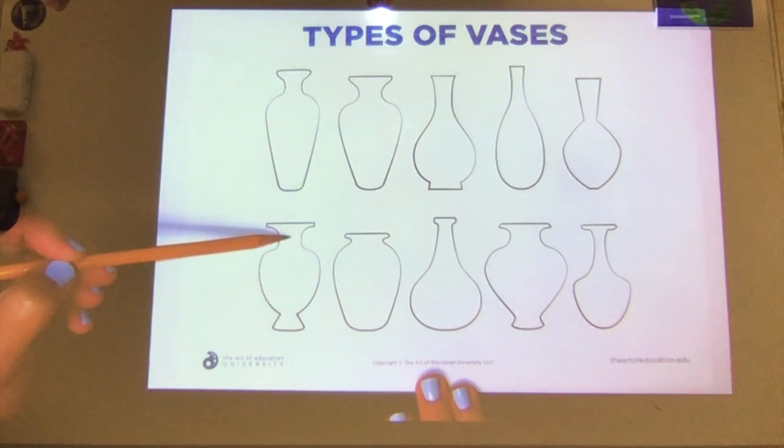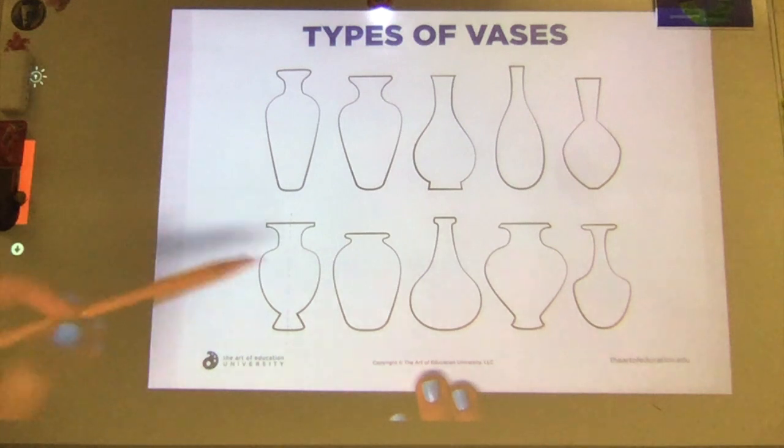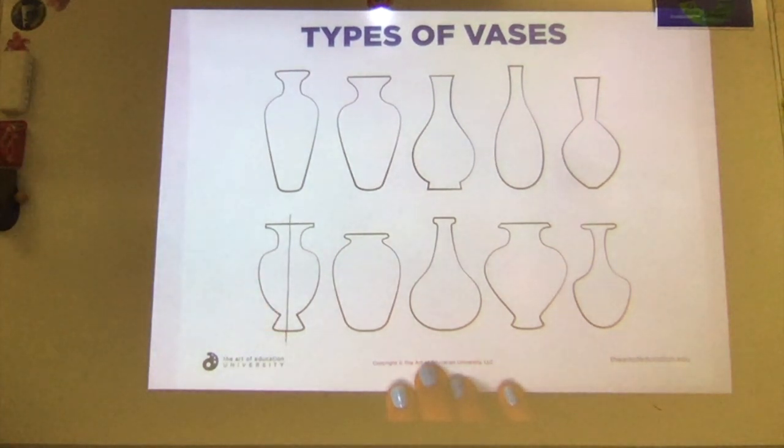So if I were to just draw a dotted line through this vase here, you would see that it's the same on both sides of the vase. I'll make that a little bit darker so that you can see it there. Notice how this side is the exact same as that side.